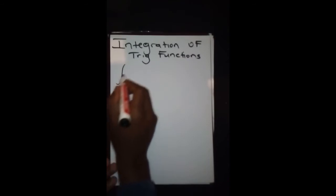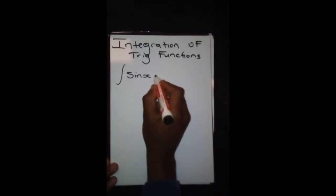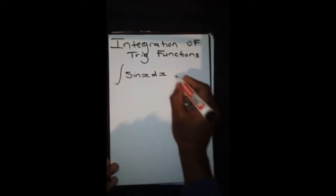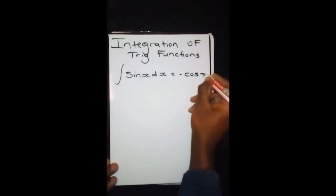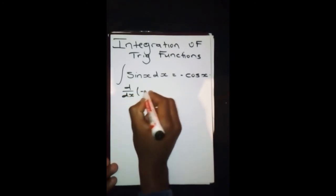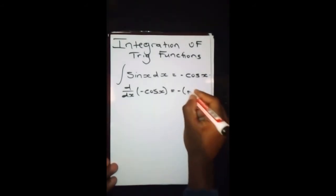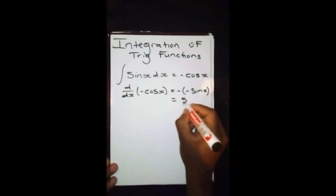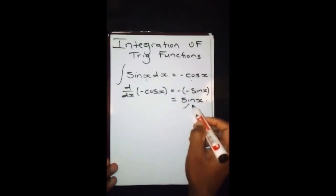What I mean is that when we integrate sin(x)dx, it becomes -cos(x) + C, because d/dx of -cos(x) is negative negative sin(x), and this gives us sin(x). So that's why this becomes this—because if we differentiate the answer, it gives us this.